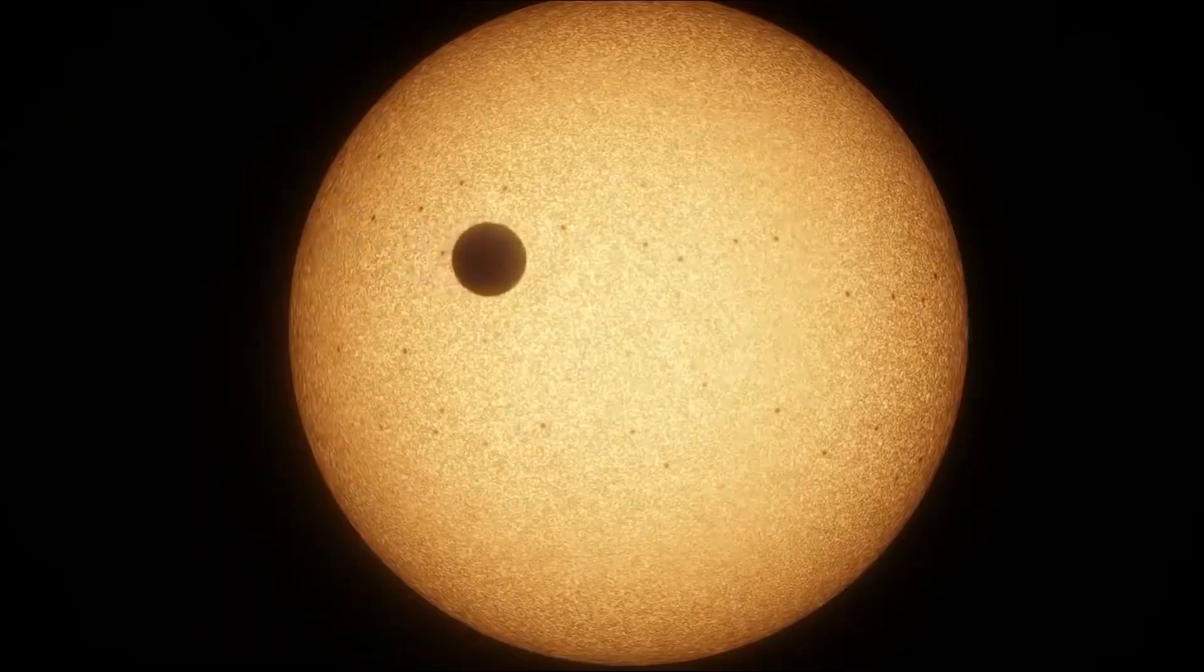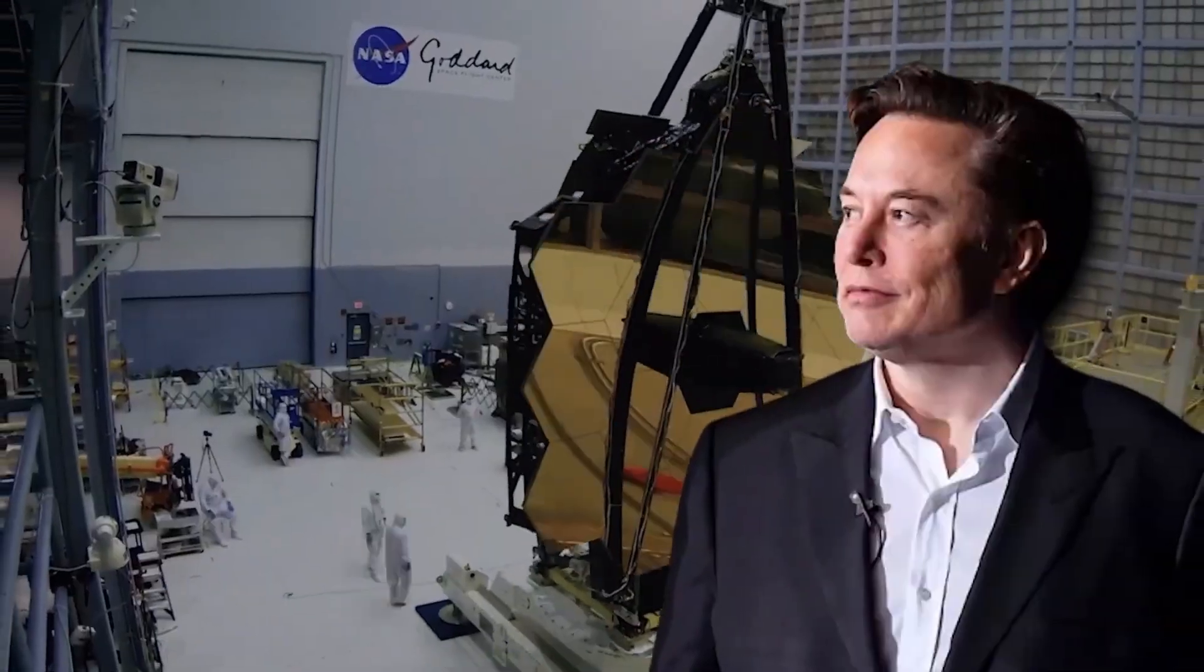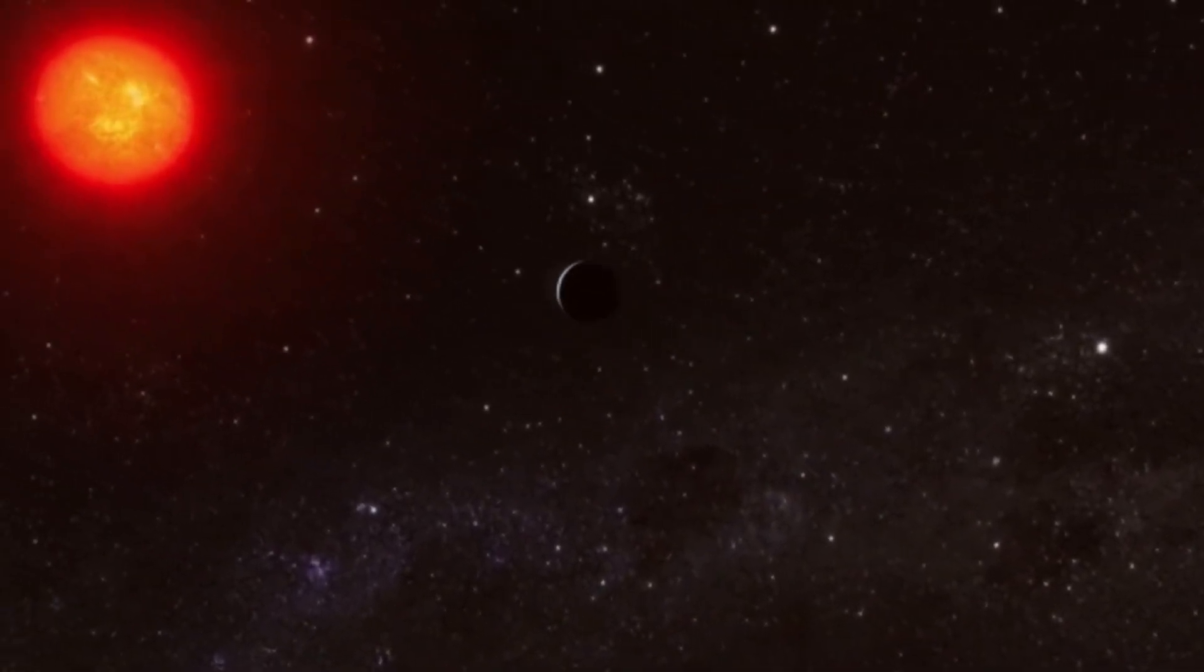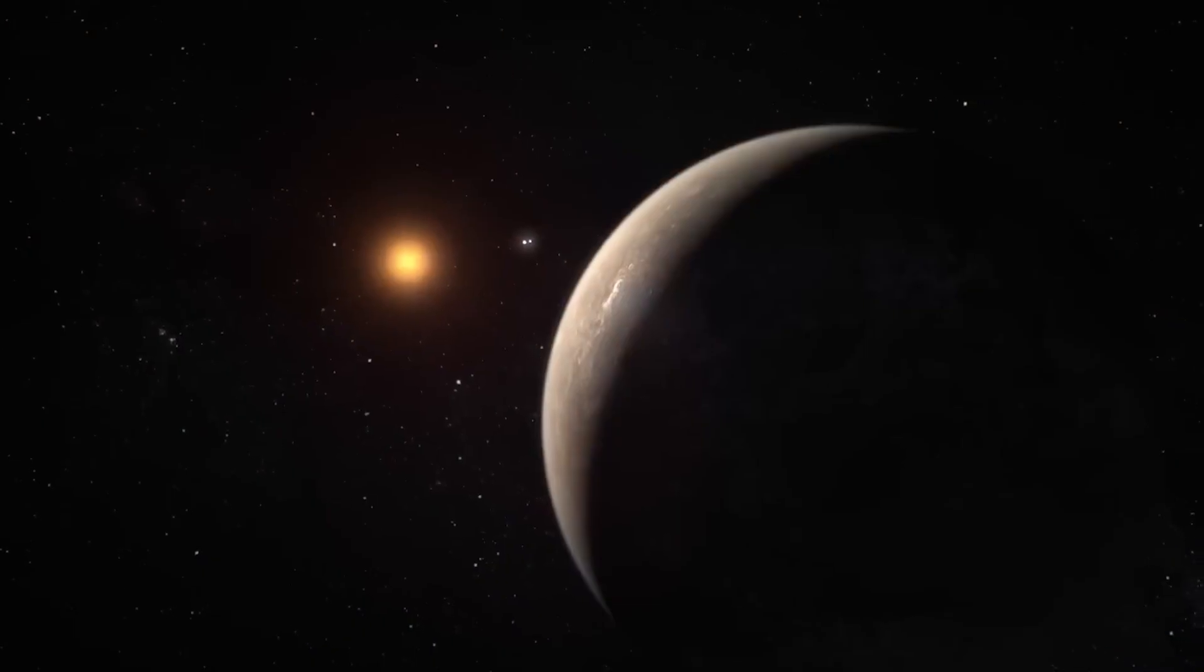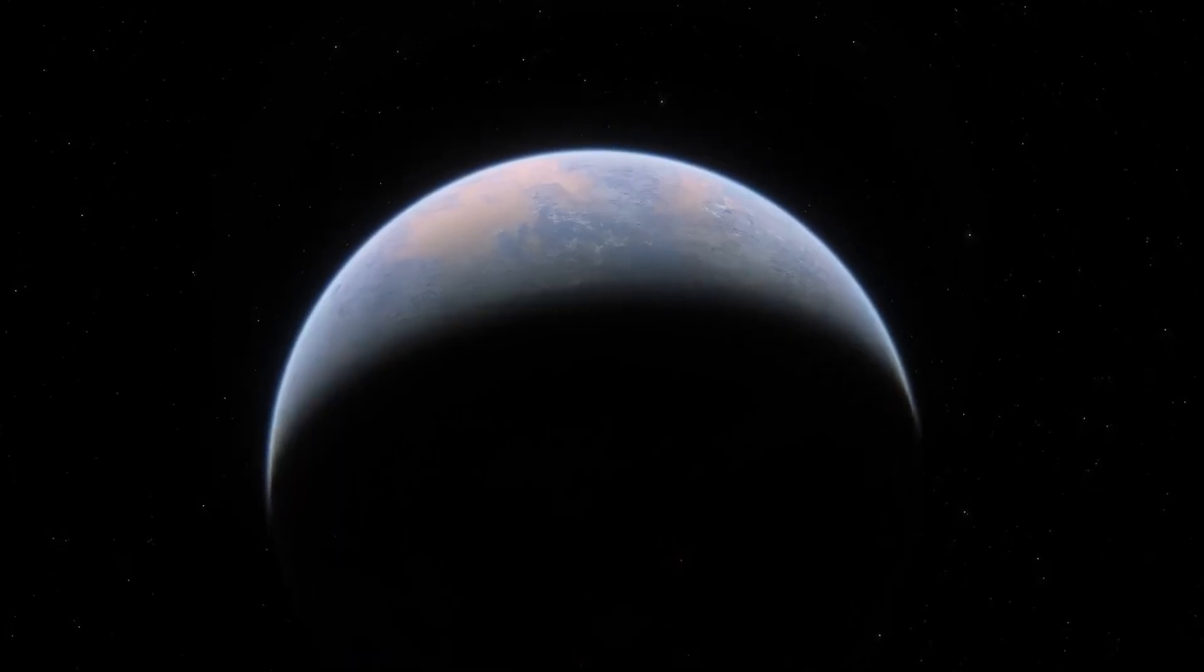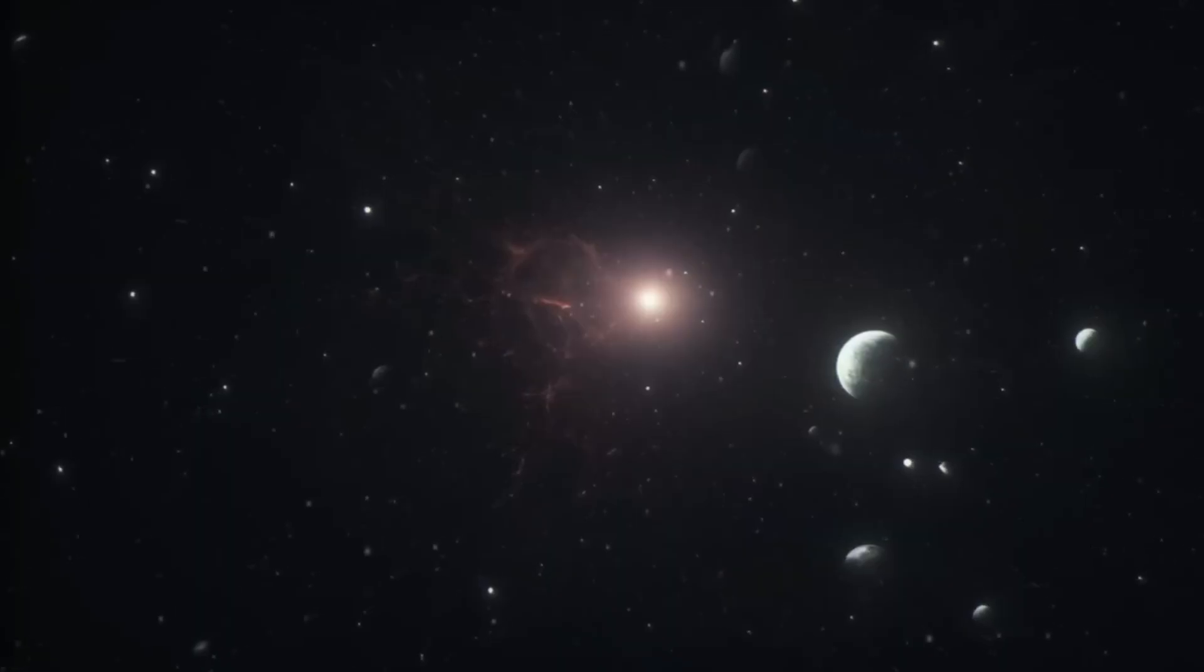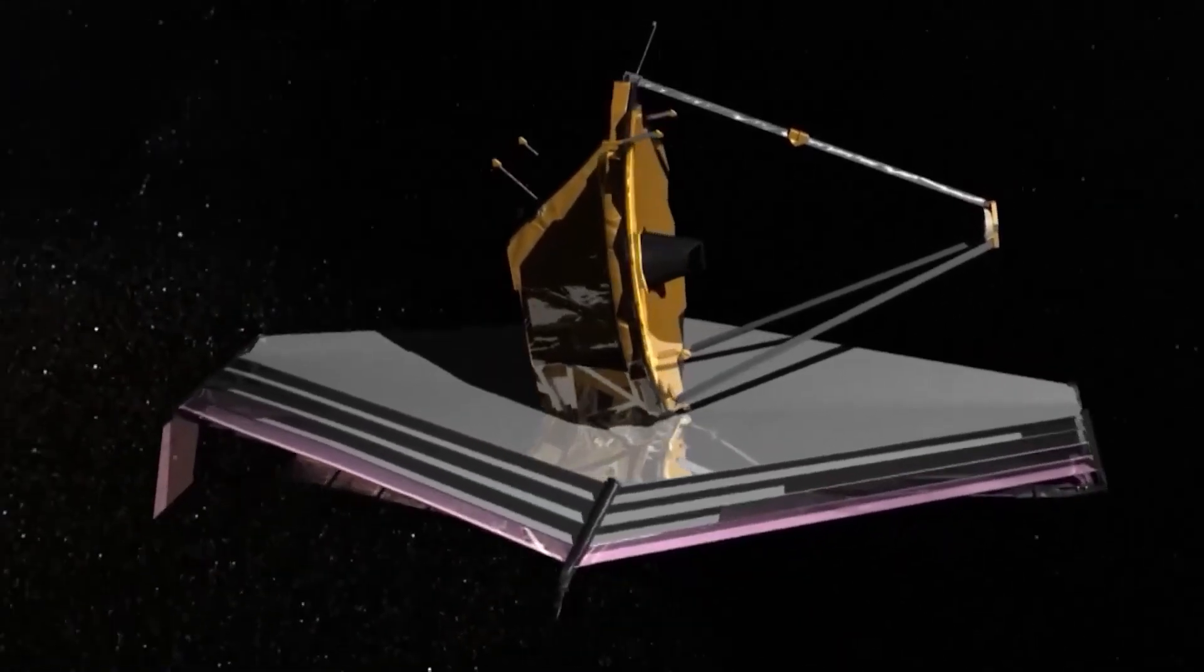The James Webb Space Telescope was created to answer some of the biggest questions in astronomy. How did the universe begin? What were the first galaxies like? How do stars and planets form? To explore these questions, astronomers needed a telescope that could observe the universe in ways that older telescopes, like the Hubble Space Telescope, couldn't. Hubble had done incredible work for over 30 years, but it only observed the universe in visible and ultraviolet light. To explore even more of the universe's secrets, scientists realized they needed to build a telescope that could observe infrared light.